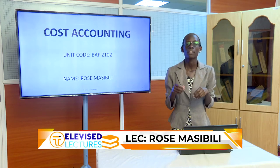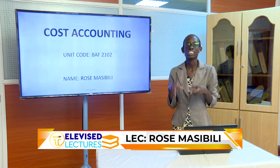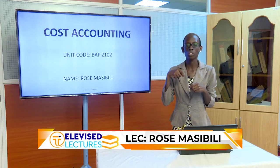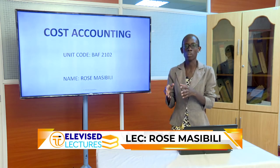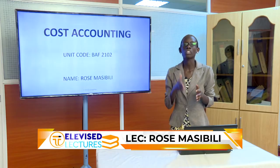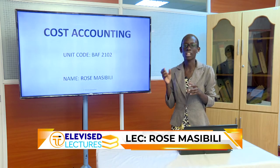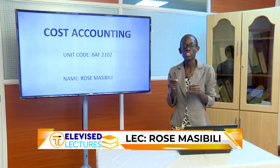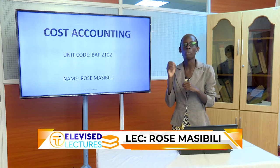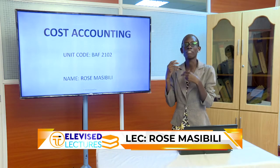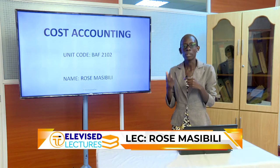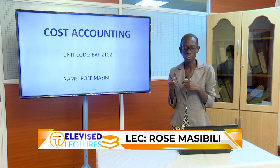Cost accounting deals with the current issues of an organization. While financial accounting looks at the historical bit to determine profit or loss, cost accounting helps us break down the processes in an organization so that at each stage you can determine how the organization is performing, how it's using its resources, and be able to advise management and make proper decisions.